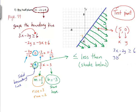3 times 5 minus 2 times 0 should be, according to this, greater than or equal to 6. Let's see if that's a true statement. 15 minus 0, is that greater than or equal to 6? Yes, indeed. This is a true statement. Therefore, you know you have the correct area shaded. And that's the solution to question F on page 99.